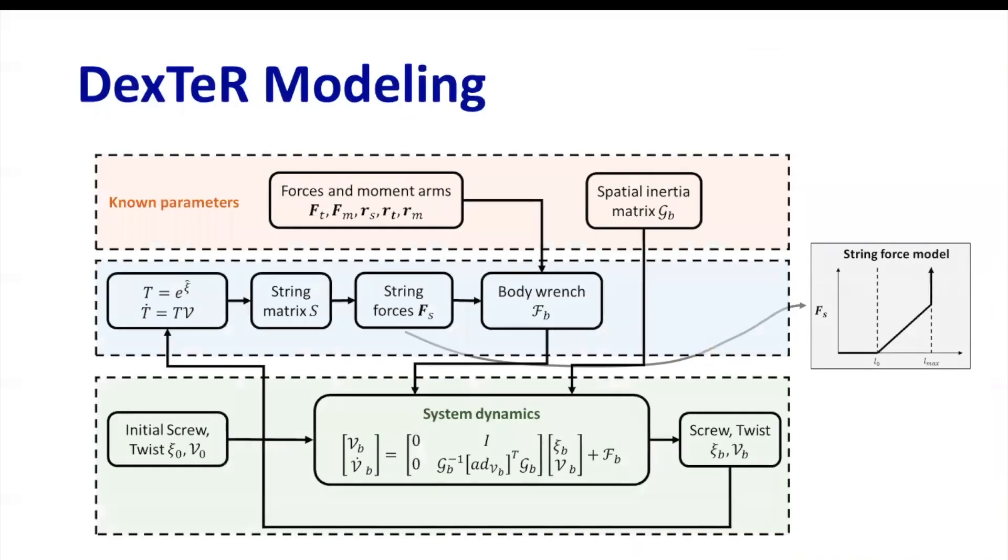To model these tensegrity structures, a new method using Lie groups and screw theory is applied. This method uses the ideas of rotation and transformation matrices to calculate the location of one subvertebra with respect to another.